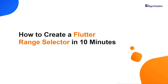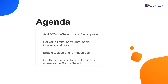Hi everyone. Welcome to this video on getting started with the Syncfusion Flutter Range Selector. In this video, you will see how to add the Syncfusion Flutter Sliders package to a Flutter project and add the Range Selector widget to it. After creating the Range Selector, I will explain how to use a chart widget as the Range Selector's child widget. Then, I will show you how to set value limits, show data labels, intervals and ticks, enable tooltips, and format the Range Selector values. Also, I will show you how to get the selected values and move the thumb in a discrete manner. Finally, I will show you how to set date-time values to the Range Selector.